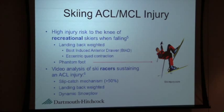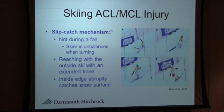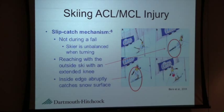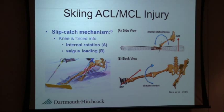The slip-catch mechanism is notable because it's not necessarily during a fall. The skier is unbalanced when turning — the outside leg comes off the snow, they try to reach to put that outside ski back on the snow with the knee extended. When they hit the inside edge on the snow, the ski abruptly catches and forces the knee into internal rotation. With parabolic skis, when that outside edge hits the snow, it automatically wants to turn — creating increased internal rotation and valgus loading of the knee, generating high levels of force to the ACL.